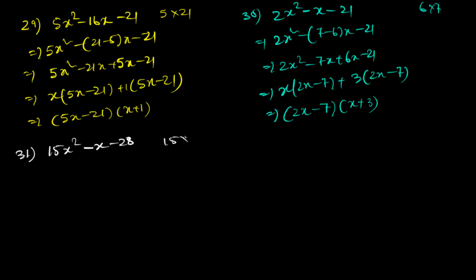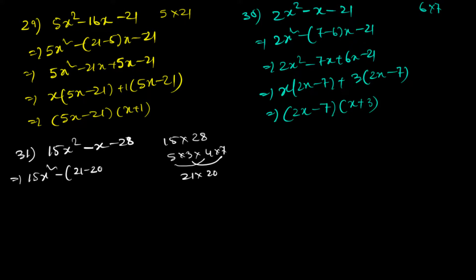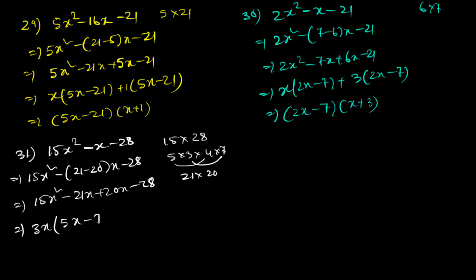Question 31: 15x² minus x minus 28. So 15 times 28 = 420, and 5 × 3 × 4 × 7 gives factors 21 times 20. So: 15x² minus 21x plus 20x minus 28. Taking 3x common gives (5x minus 7), and taking 4 common gives (5x minus 7). The answer is (5x minus 7)(3x plus 4).